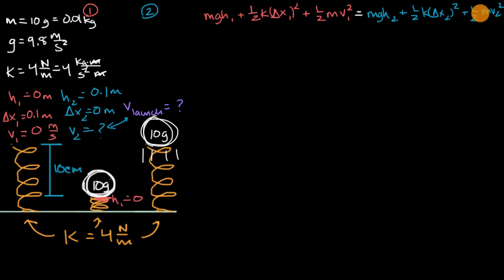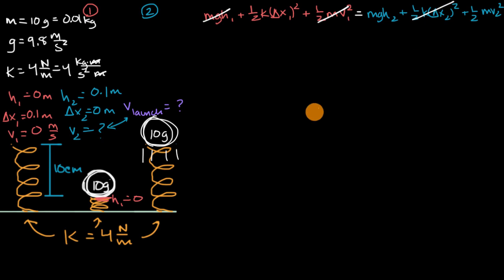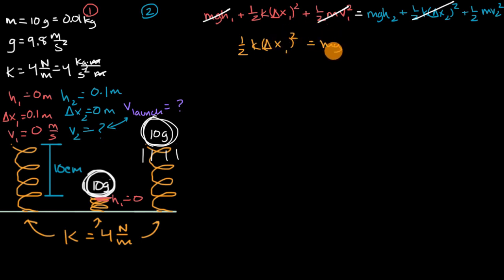Let's simplify. Since H1 equals zero, that gravitational potential energy term in state one drops out. Since V1 equals zero, that kinetic energy term in state one drops out. Since delta X in state two equals zero, that elastic potential energy term in state two drops out. We can rewrite the equation as: one half k times delta X one squared equals mg times H sub two plus one half m times V sub two squared.